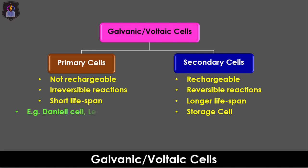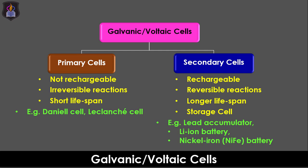Examples of primary cells are the Daniel and Leclanche cells. While some common examples of secondary cells are the lead accumulator, that's your car battery, the lithium-ion battery, which is your phone battery, the nickel-ion battery and so on. Let's look at some of these cells in detail.